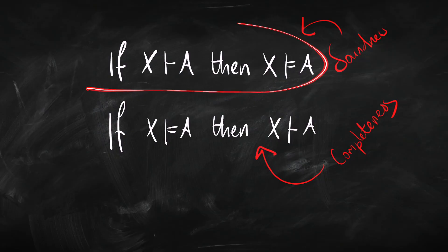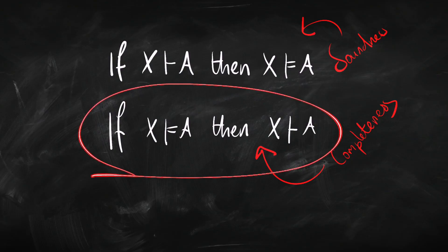Soundness is our guarantee that our proof system — proof in inverted commas — genuinely gives us what we want from a proof. So soundness is kind of non-negotiable for a good proof system; it's got to be sound. Completeness is important too, but it's not quite so important.